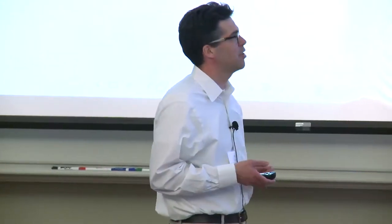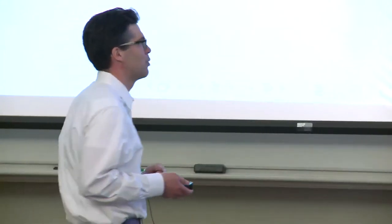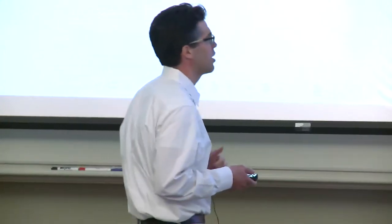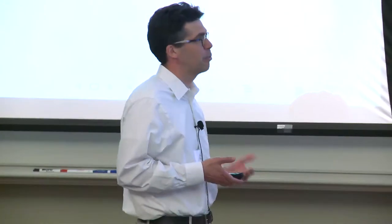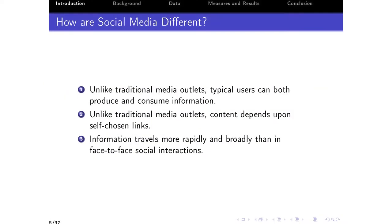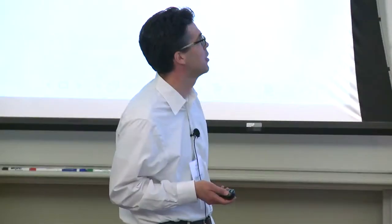Finally — this is a little less relevant for the results I'm going to show today, but more relevant for what we're working on next — if we compare social media to traditional face-to-face social interactions, information is going to travel more rapidly and broadly. This is due to the fact that users can retweet other users' information, so information travels quickly.